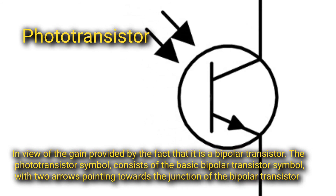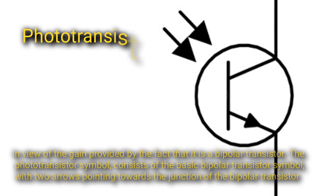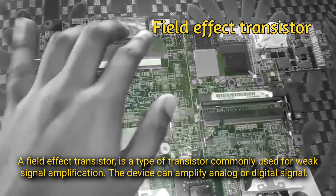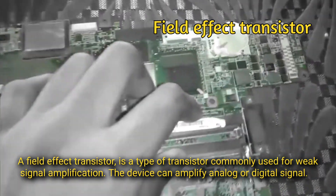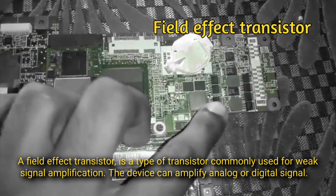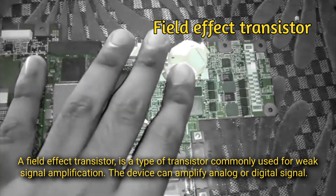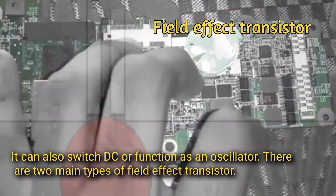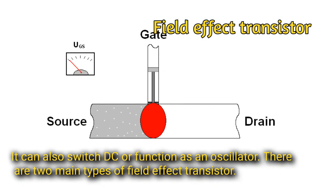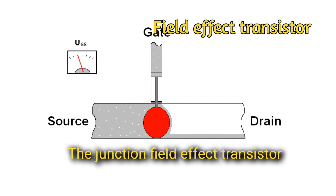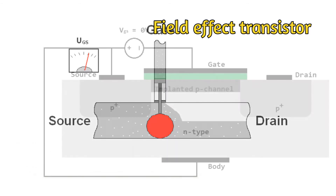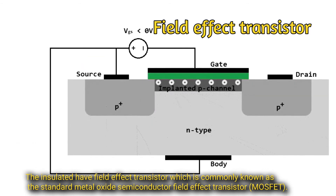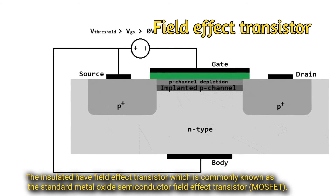Field Effect Transistor (FET): a field effect transistor is a type of transistor commonly used for weak signal amplification. The device can amplify analog or digital signals, switch DC, or function as an oscillator. There are two main types: the junction field effect transistor (JFET) and the insulated gate field effect transistor, commonly known as the metal oxide semiconductor field effect transistor, or MOSFET.